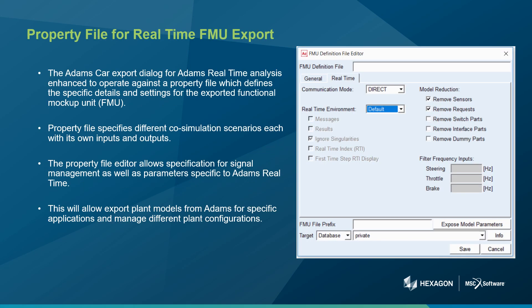In real-time workflows, it is important to export plant models for specific applications. Adams 2021.2 allows users the ability to easily manage different plant configurations, with the goal that Adams Car users could easily generate plant configurations for the model. The Adams Car export dialogue for Adams real-time analysis has been updated to operate against a property file which defines details and settings for the exported real-time FMU. The property file specifies different plant modeling settings for various course simulation scenarios, each with its own inputs and outputs. For example, requirements for communicating with a driving simulator will differ from those needed to communicate with a single hardware component. This allows users the ability to export plant models from Adams for specific applications and manage different plant configurations.